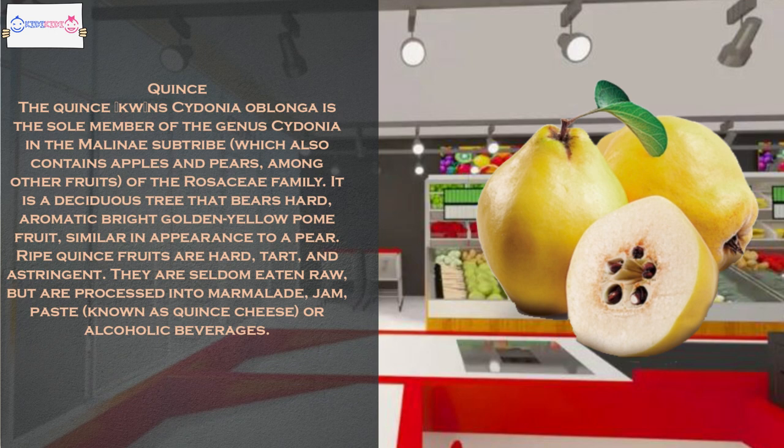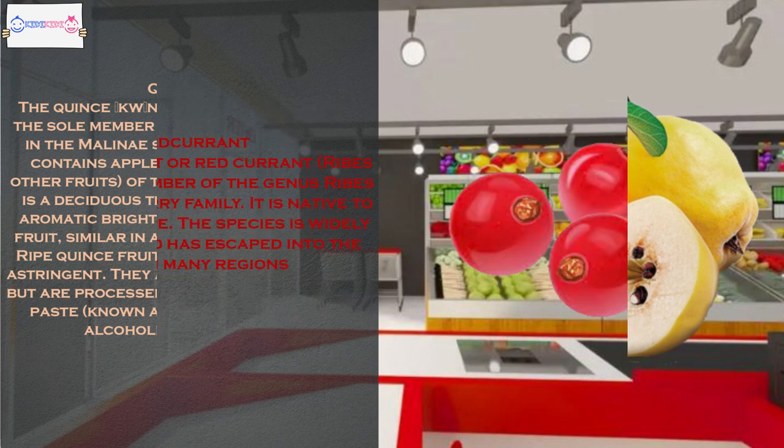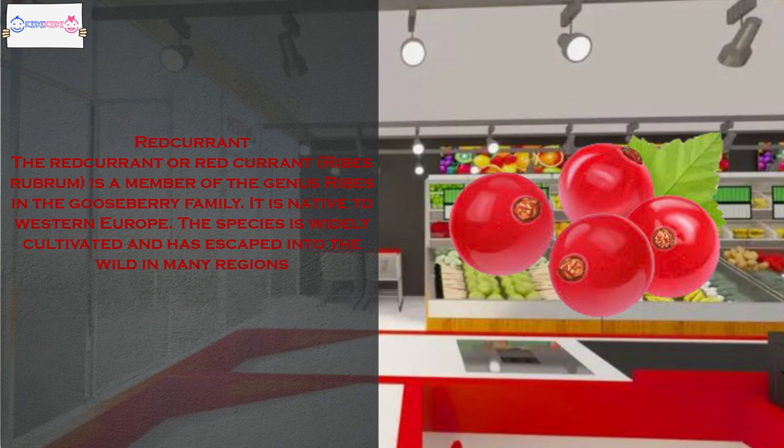Quince fruits are seldom eaten raw, but are processed into marmalade, jam, paste known as quince cheese, or alcoholic beverages. The red currant, Ribes rubrum, is a member of the genus Ribes in the gooseberry family. It is native to Western Europe; the species is widely cultivated and has escaped into the wild in many regions.